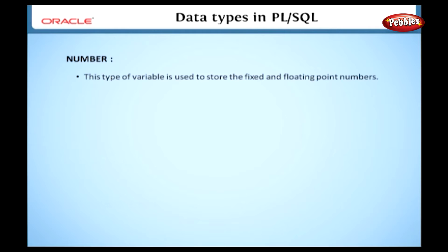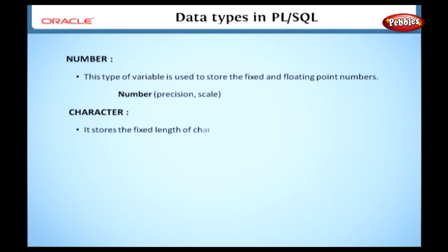First, we will see the number data type. This type of variable is used to store fixed and floating point numbers. Let's see the syntax: Number(precision, scale). Here precision specifies the total number of digits and scale specifies where the rounding occurs.